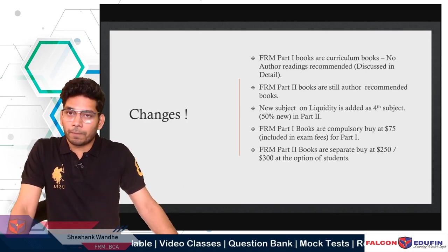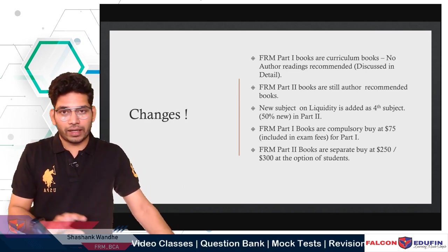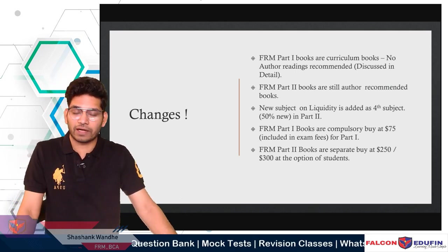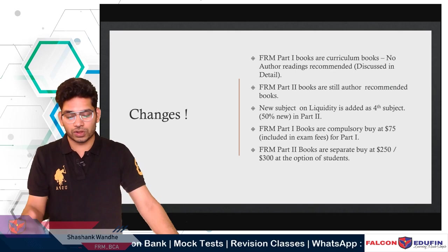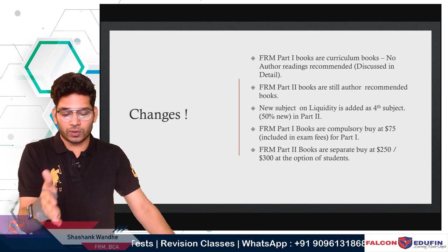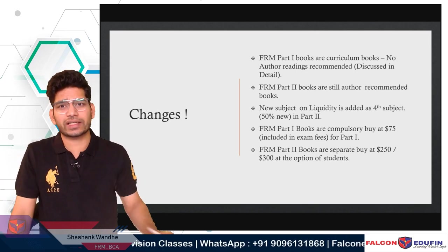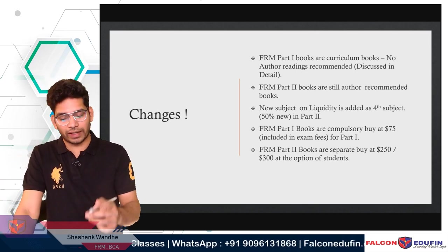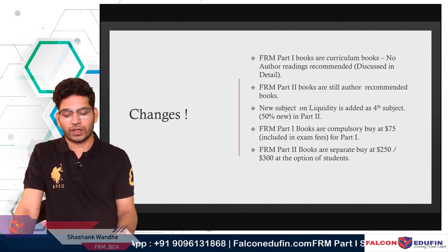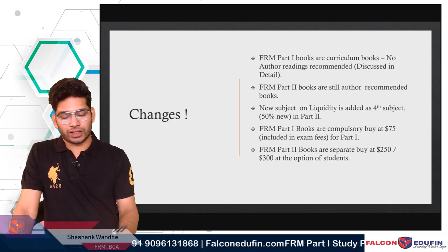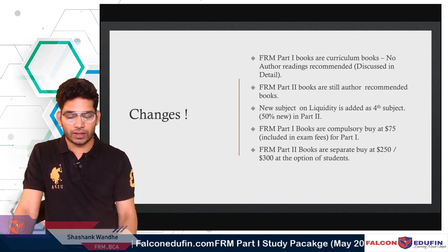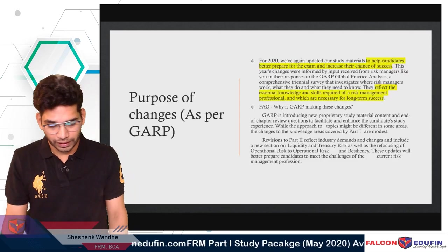FRM Part 1 books are now compulsorily purchased — you must buy them. The exam fees have increased by $75, and books are accessible via ebooks through the app only. For FRM Part 2, books are separate at $250 for ebooks and $300 for printed books.